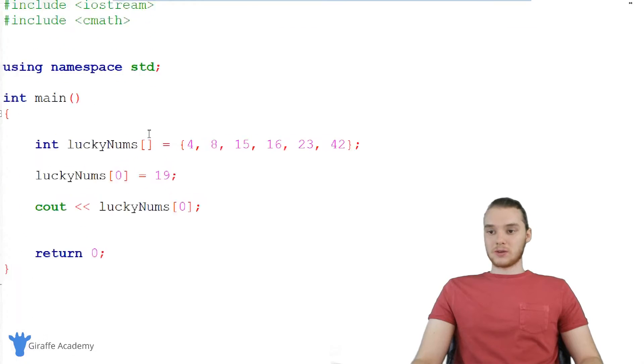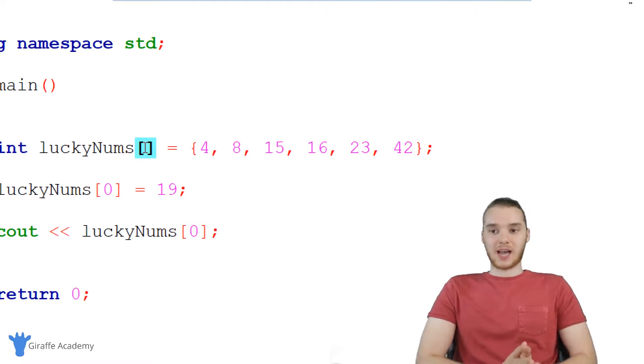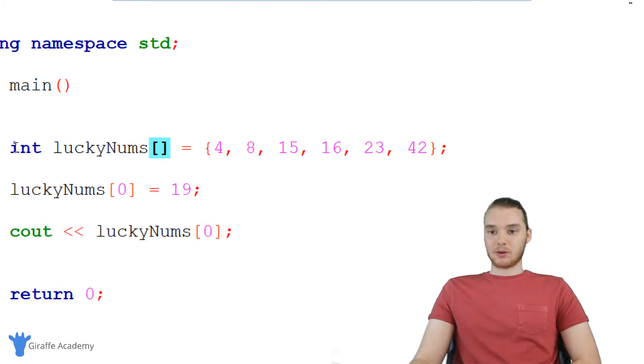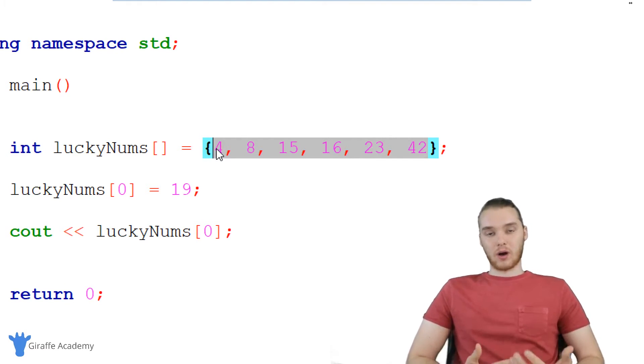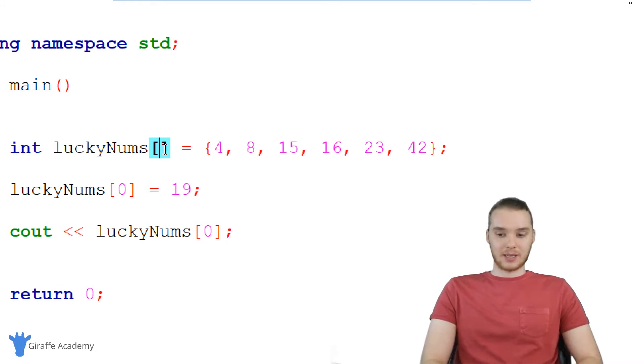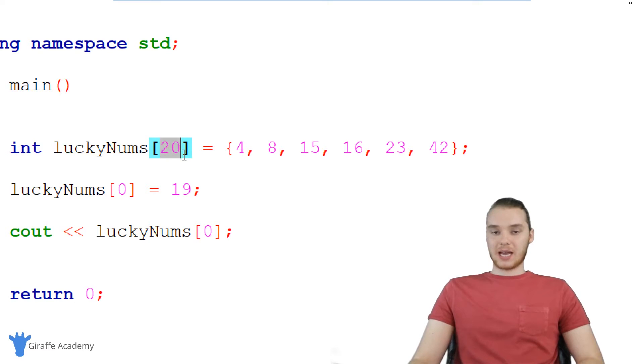Another thing we can do with these arrays is I can give them a size. So normally, if I just create the array like this, where I just say int lucky nums and an empty square brackets, the array is only going to be able to store the elements that I declare over here. But a lot of times when you're making these arrays, you might not know what all the elements should be. So over here, I could put in a number like I could say like 20. And essentially what I'm doing here is I'm telling C++ that I want to be able to store 20 elements inside of this lucky nums array.